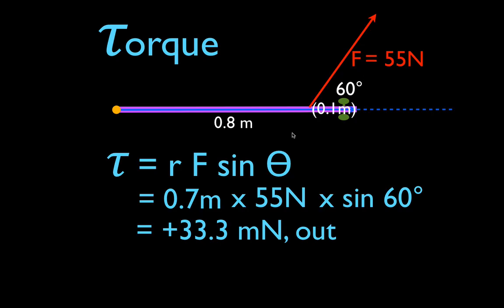This angle is 60, so obviously the supplementary angle is 120. Once again, if you use this angle — sine of 120 — you'll get the same answer, because the sine of 60 and the sine of 120 are the same. What you usually see people do is use the angle that's less than 90. But theta is, by definition, this angle. So there you have it — all you have to do is apply the torque equation to the situation: RF sine theta.